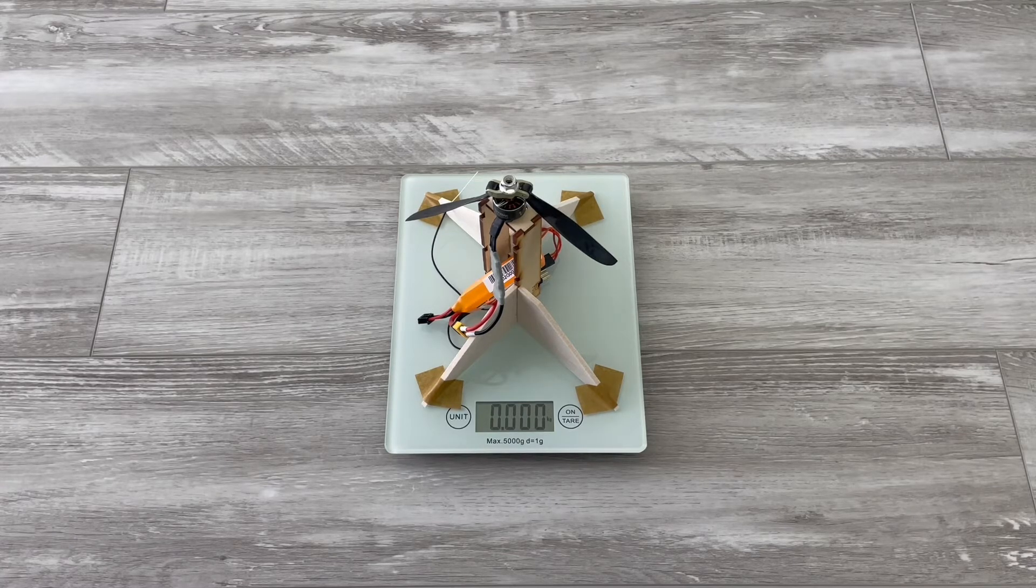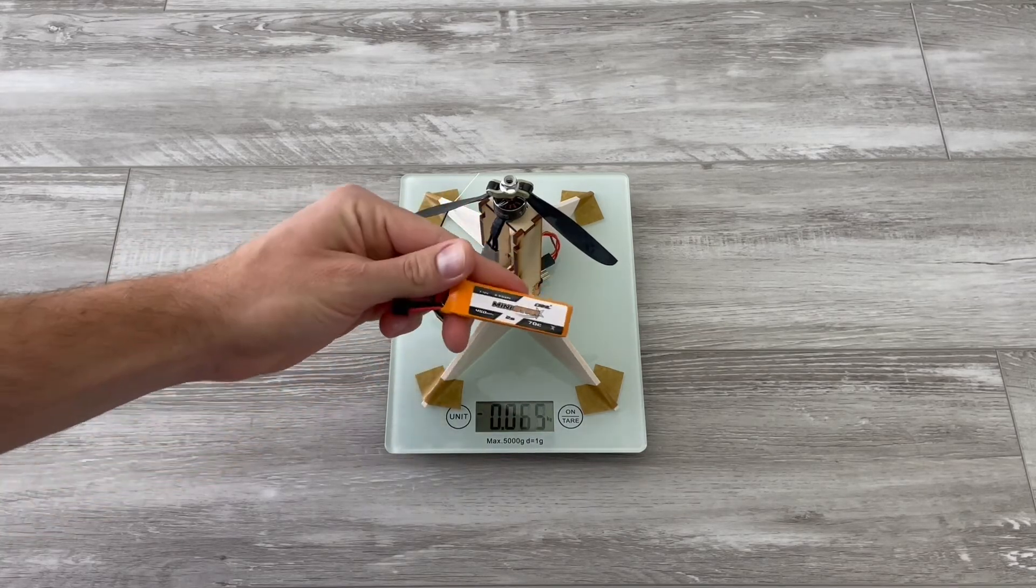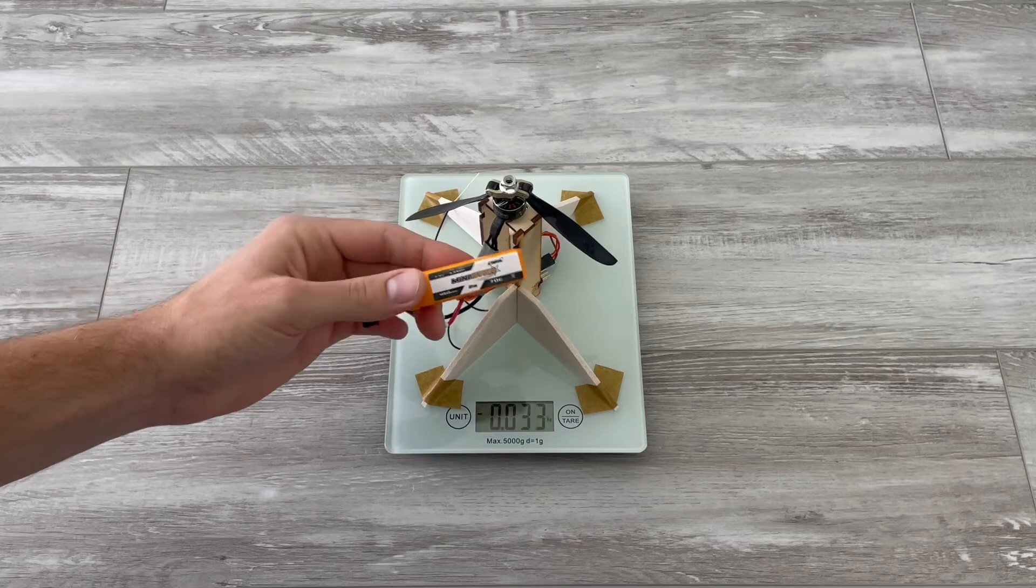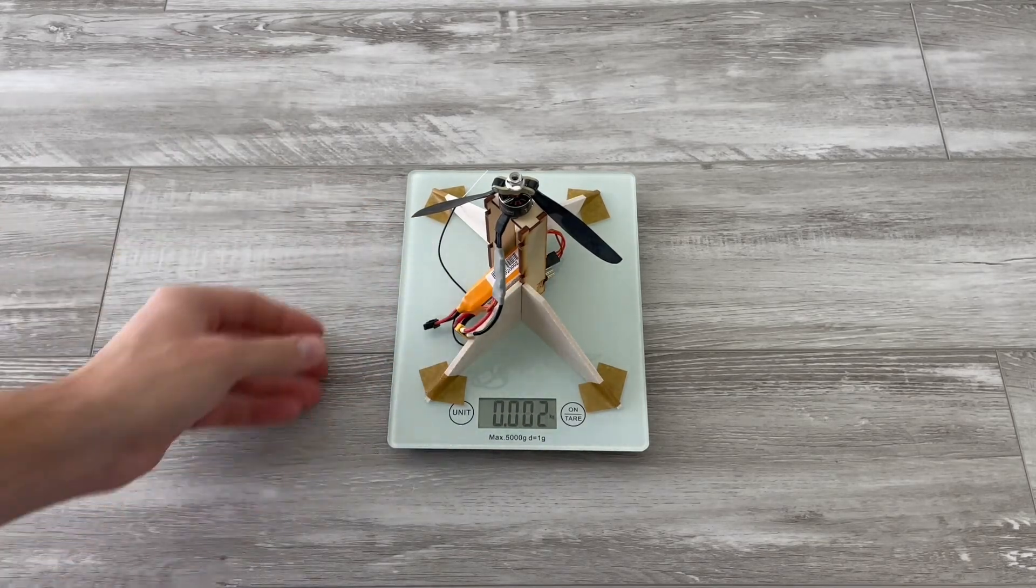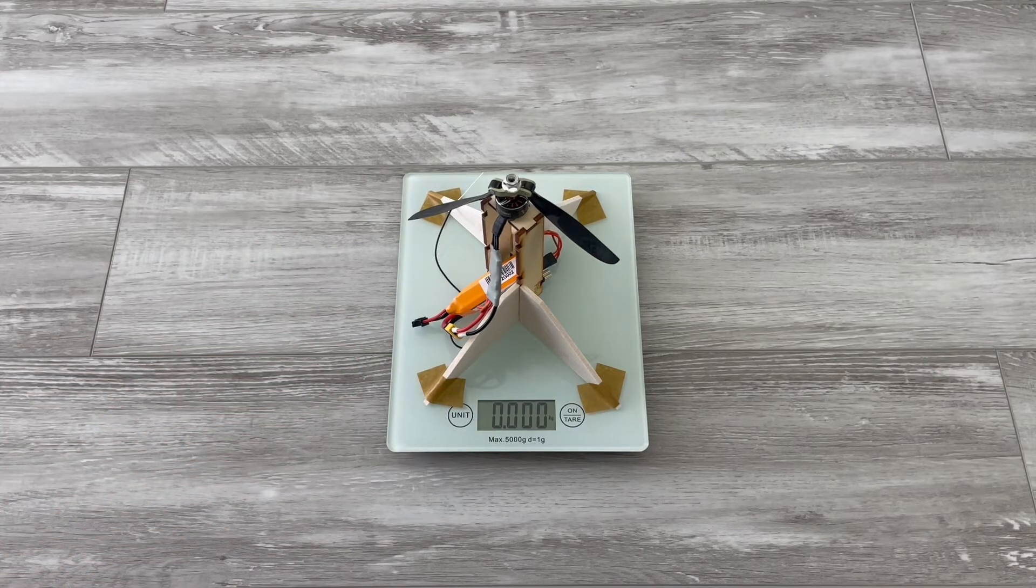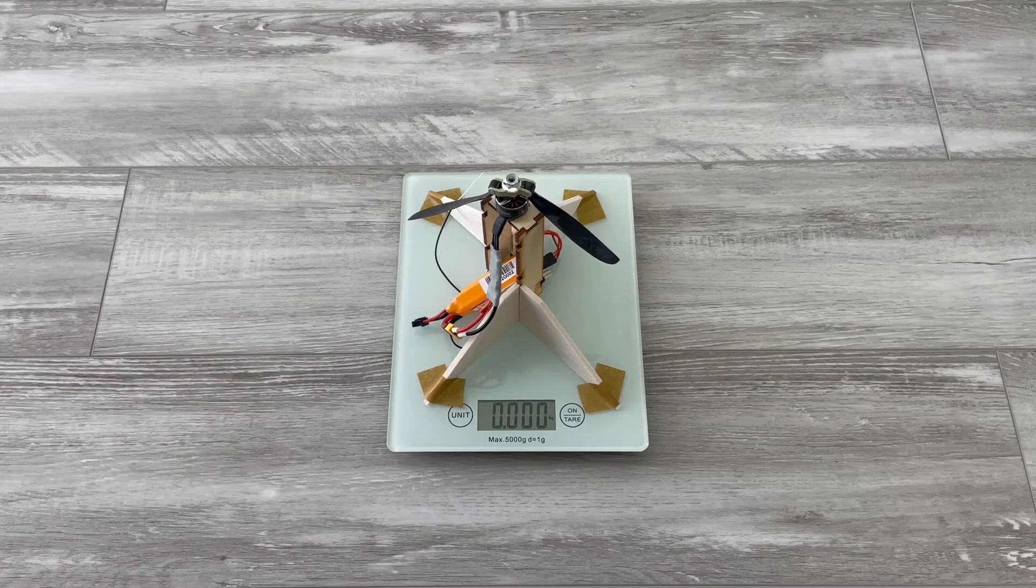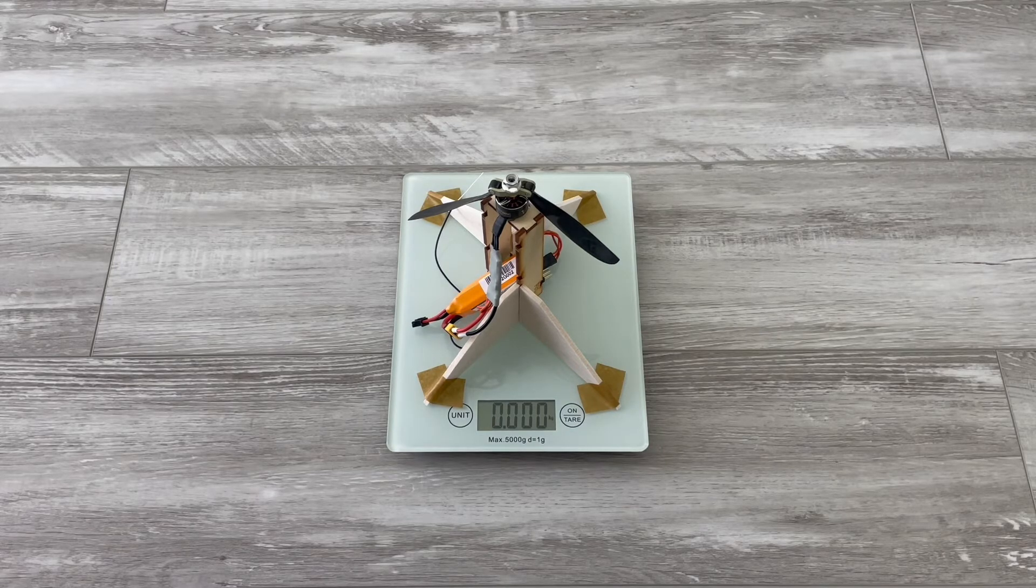From the last video we got a lot of comments that the 6x3 prop is not the best fit for lower KV motors.